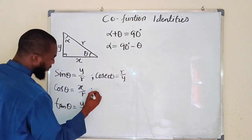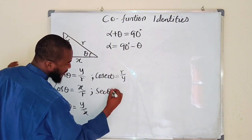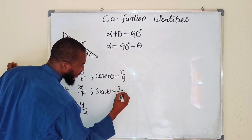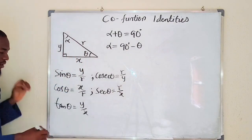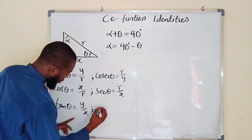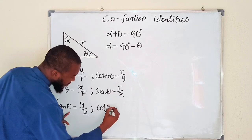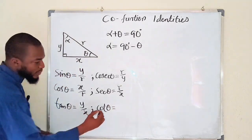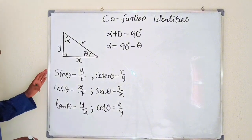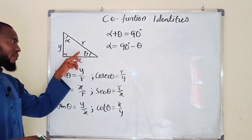The reciprocal of cosine is secant, so secant of theta equals r divided by x. The reciprocal of tangent is cotangent, so cotangent of theta equals x divided by y. That completes all six trigonometric ratios for angle theta.